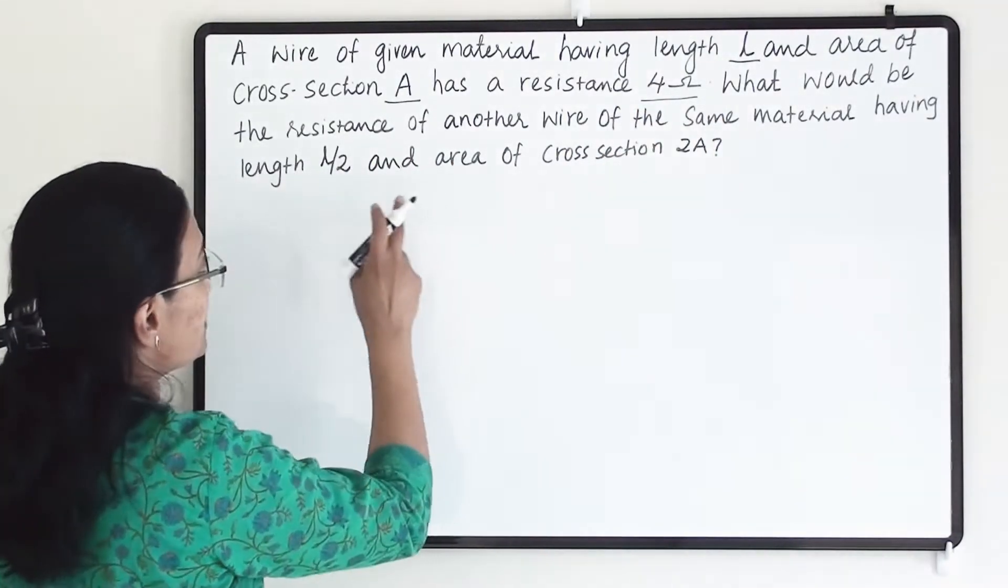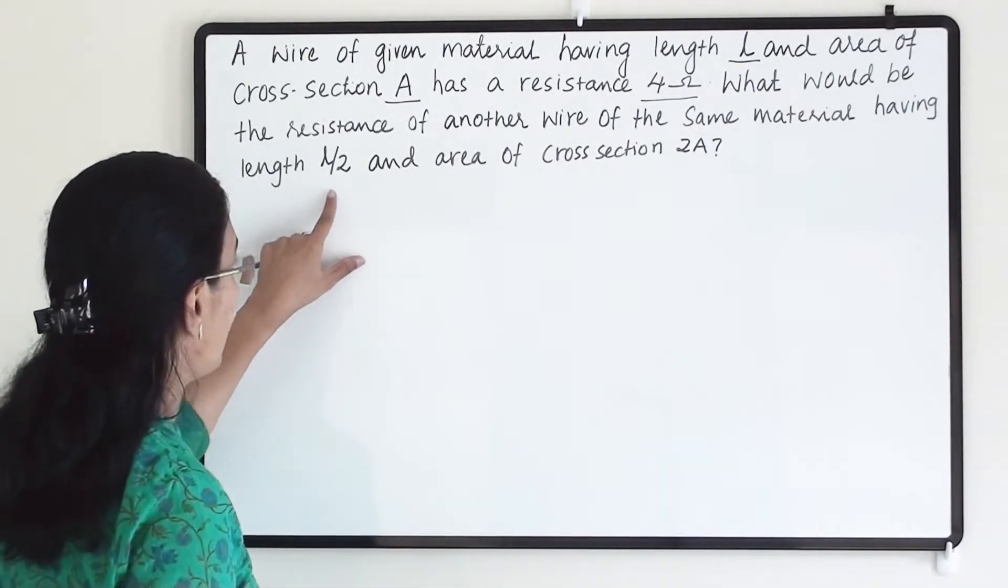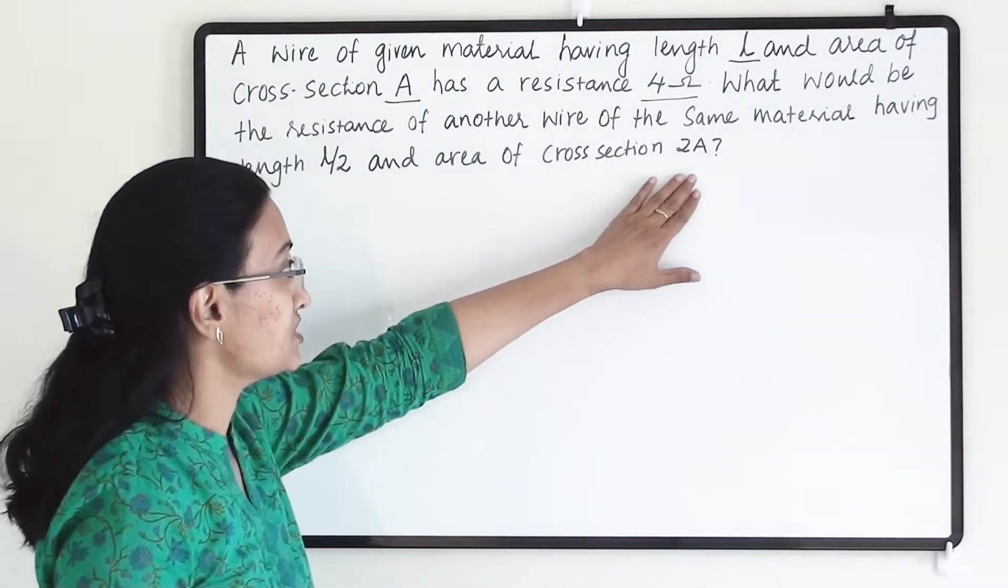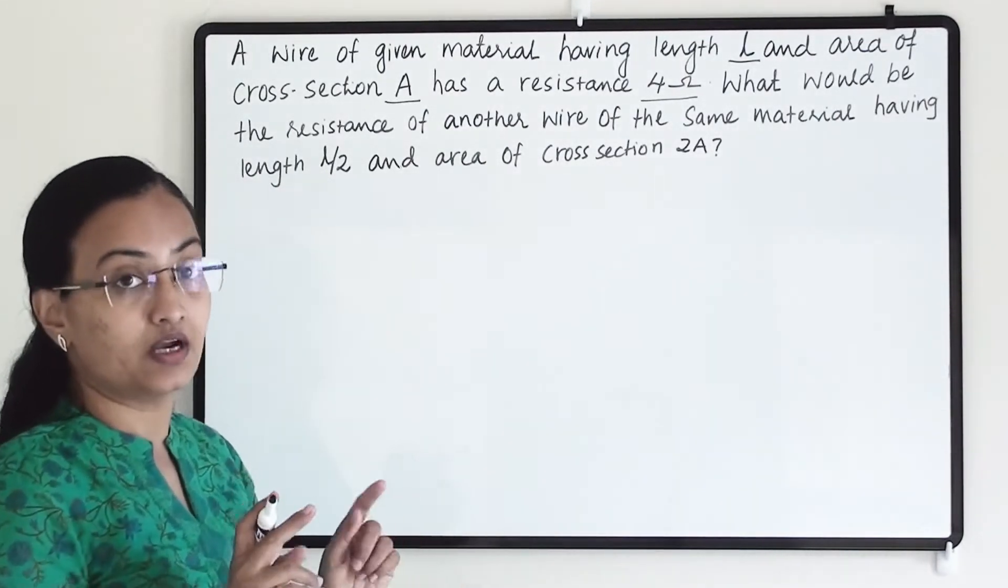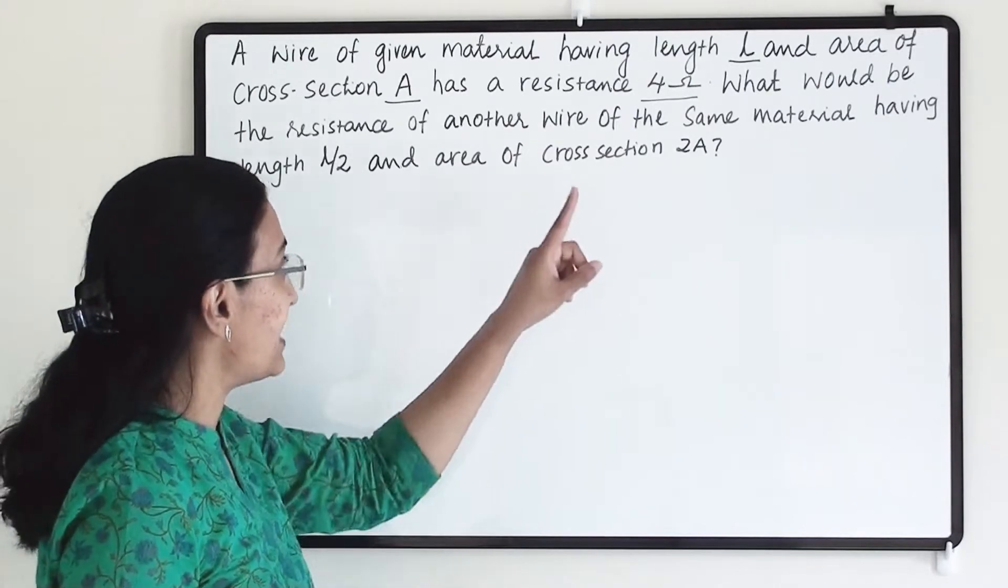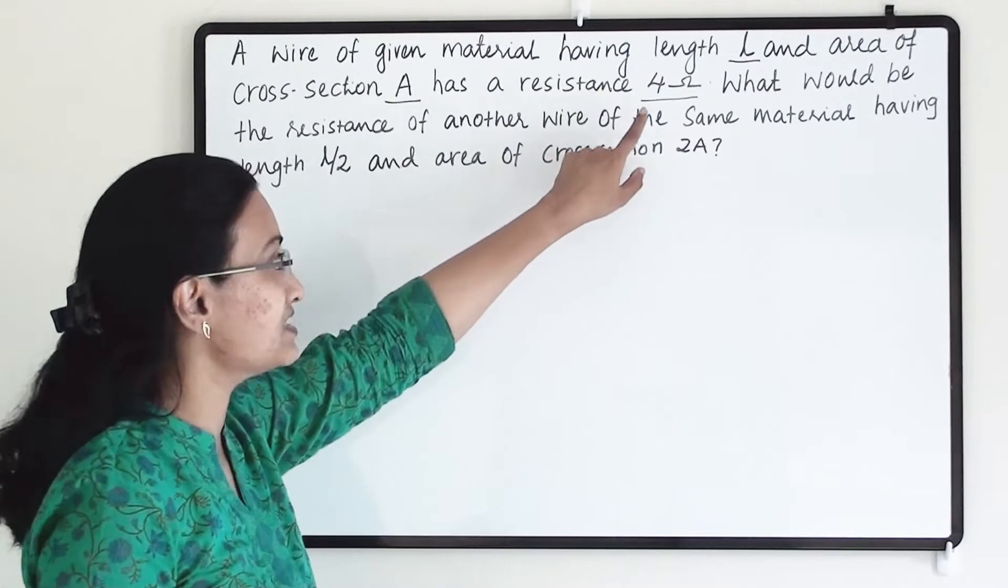What would be the resistance of another wire of the same material having length L by 2 and area of cross section 2A? So we have taken one conductor with length L and area of cross section A. At that time its resistance is 4 ohm.